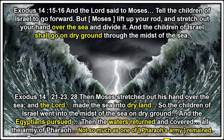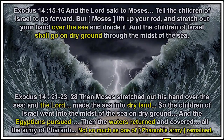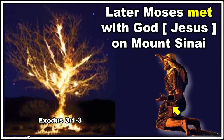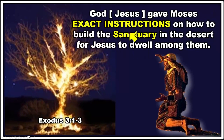This is a bit of history leading up to the sanctuary in the desert. Later in Exodus 3, Moses met with God on Mount Sinai, where God gave Moses exact instructions on how to build a sanctuary in the desert for Jesus to dwell among them — instructions on how to build the buildings, the furniture, and how to conduct the services.